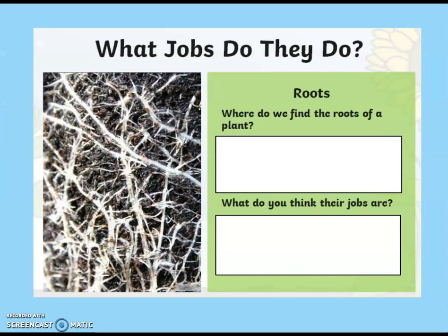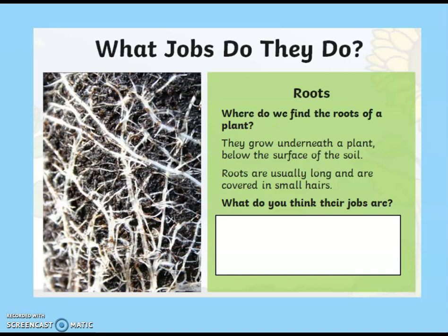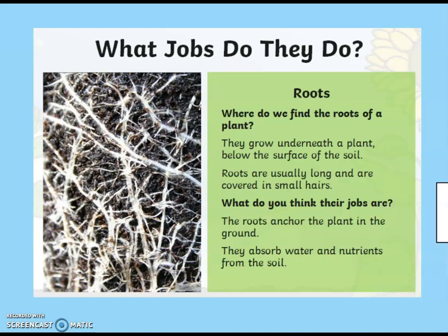Let's look together at what we found out. Starting with the roots — where do we find the roots of a plant? They grow underneath a plant, below the surface of the soil, and they're usually long and covered in small, teeny tiny hairs. There are two different functions: they anchor the plant in the ground and make sure it doesn't fall over, and they absorb water and nutrients from the soil to help the plant grow.